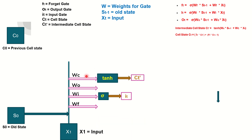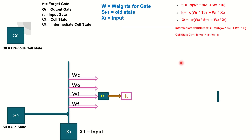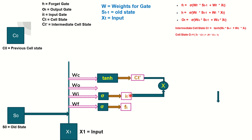The next step is to compute CT-bar, the intermediate cell state, using the formula: CT-bar = tanh(WC × S0 + WC × X1). You can see that we use the old state and the weights into the input with the tanh activation. We have now completed two important computations: IT and CT-bar. These are then multiplied together — IT × CT-bar — and the result is held ready for the next step.